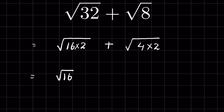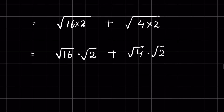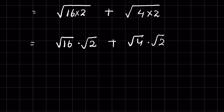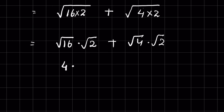Therefore, it is square root of 16 times square root of 2, plus square root of 4 times square root of 2. Now, square root of 16 is 4, because 4 times 4 is 16 — we remove the square root with the square — times square root of 2. Plus, square root of 4 is 2, times square root of 2.